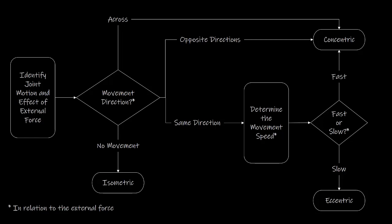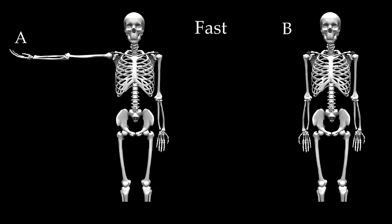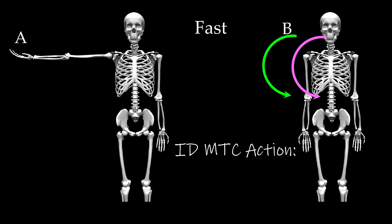With this understanding in mind, let's return to our example. Going from A to B fast, both the joint motion and the external force are creating an effect to adduct the arm — they are in the same direction. Since we are going faster than the effect of the external force alone, we conclude that we have a concentric MTC action.